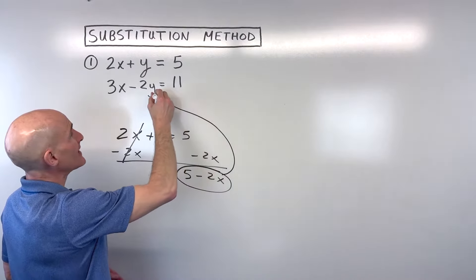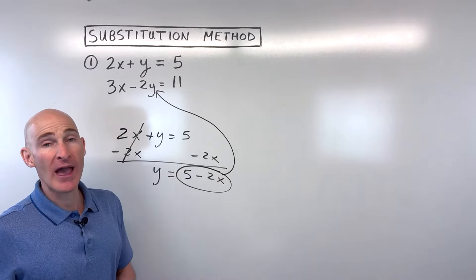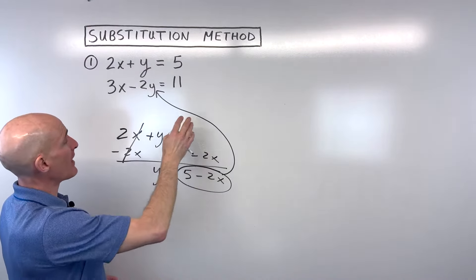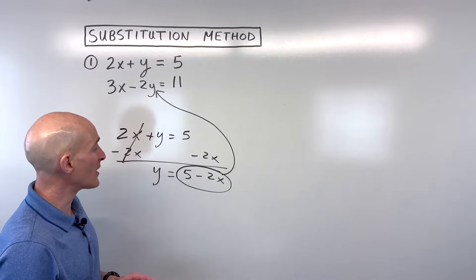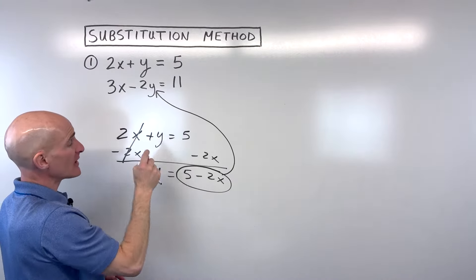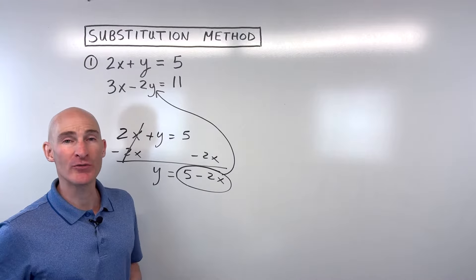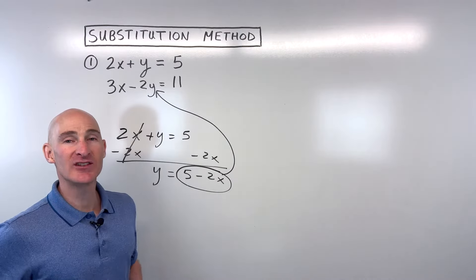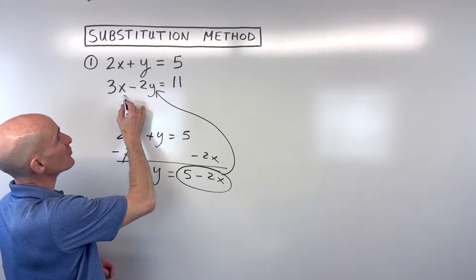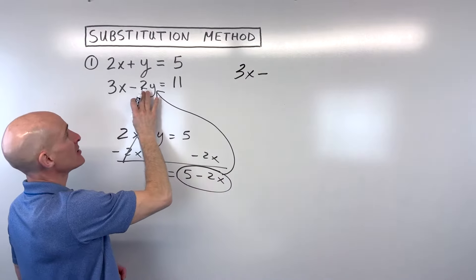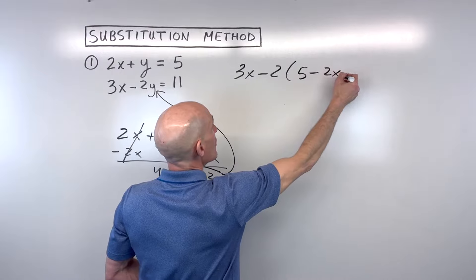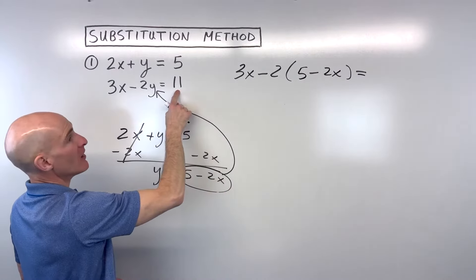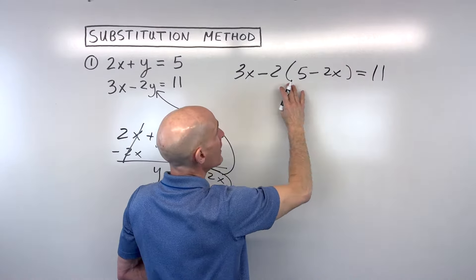Well, since y equals 5 minus 2x, let's substitute it into the other equation that we haven't used yet. Now sometimes students will make the mistake of putting it back into the original equation that they were working with here, and you're going to get an incorrect solution. What you want to do is substitute it into the other equation in place of y. It's kind of like a substitute math teacher. When your math teacher is not there, a sub shows up, right? And so what we're going to do now is rewrite this equation: 3x minus 2, but instead of y, I'm going to put what y equals, this quantity here, 5 minus 2x, equals 11. So now we have one equation with just one variable x, so we can solve for x.